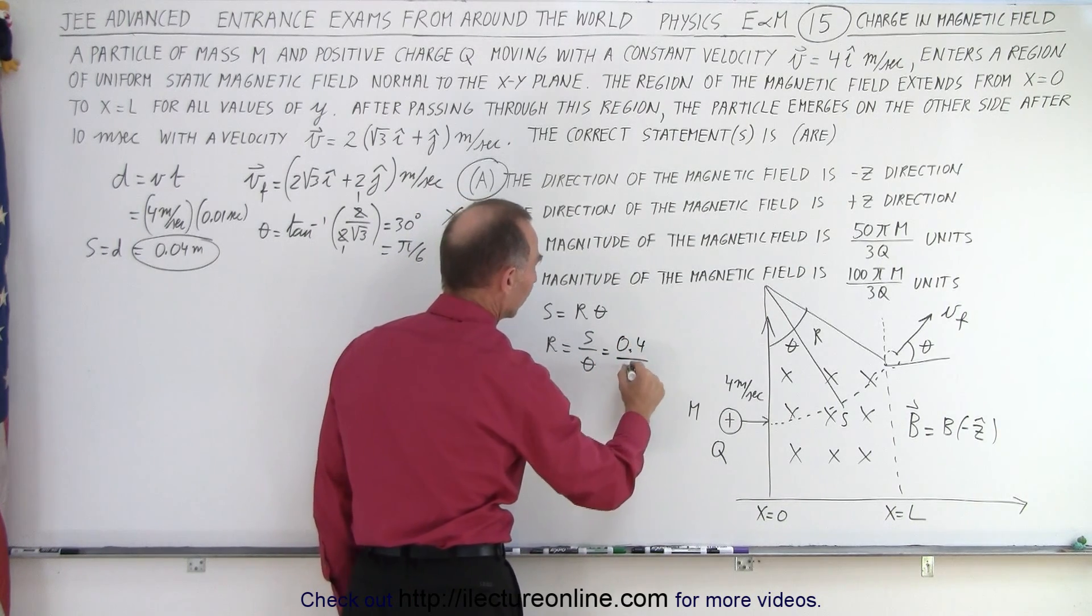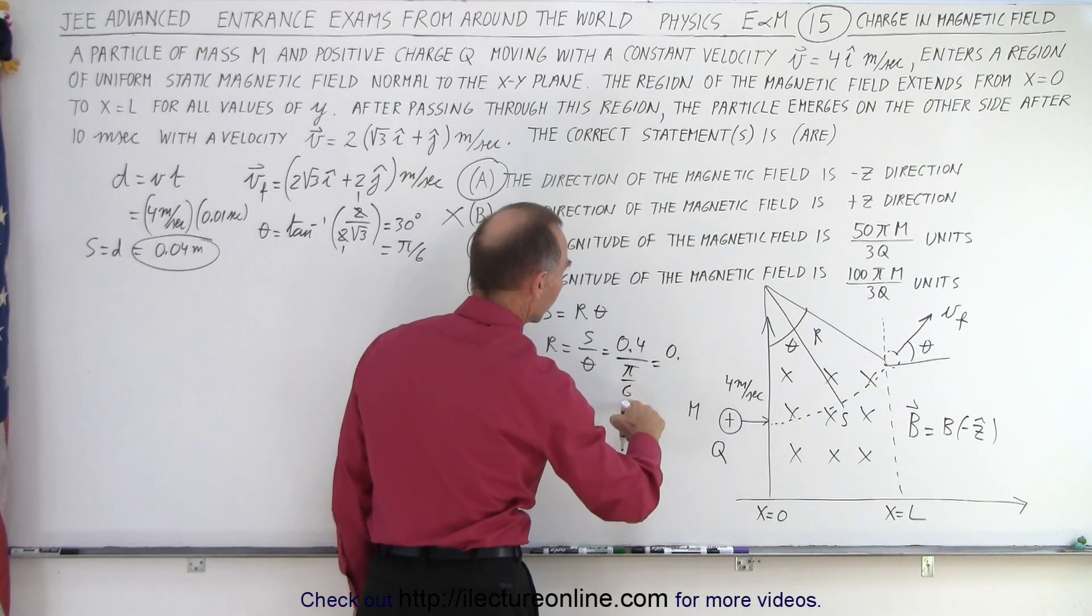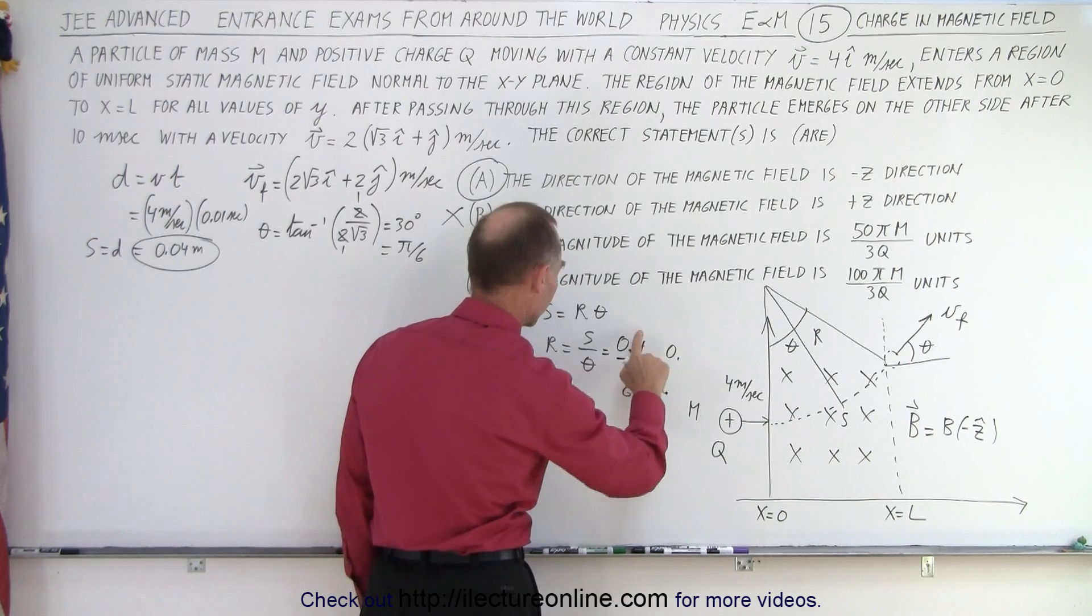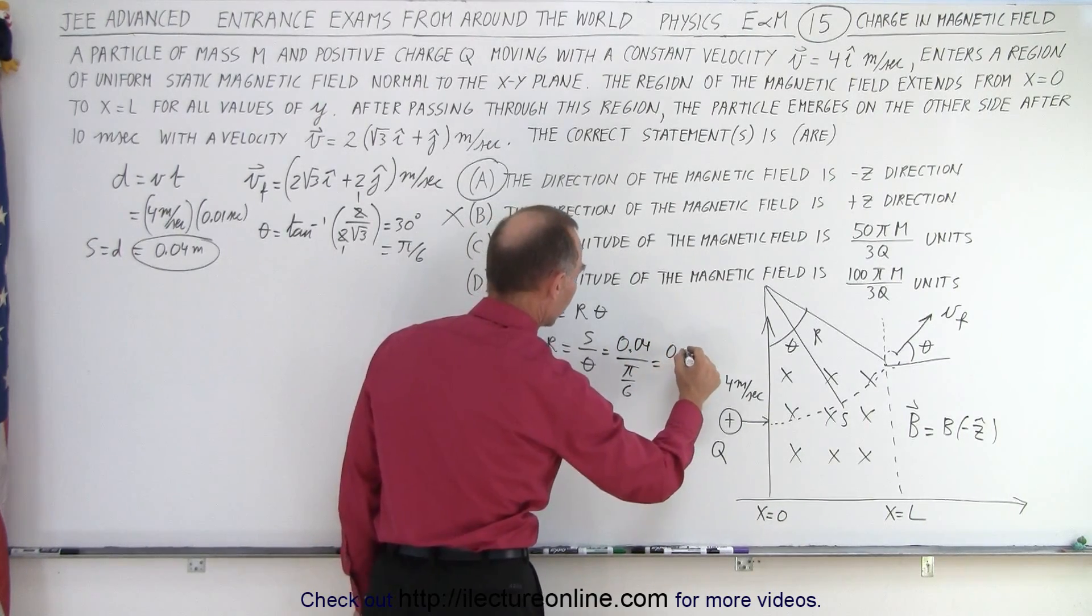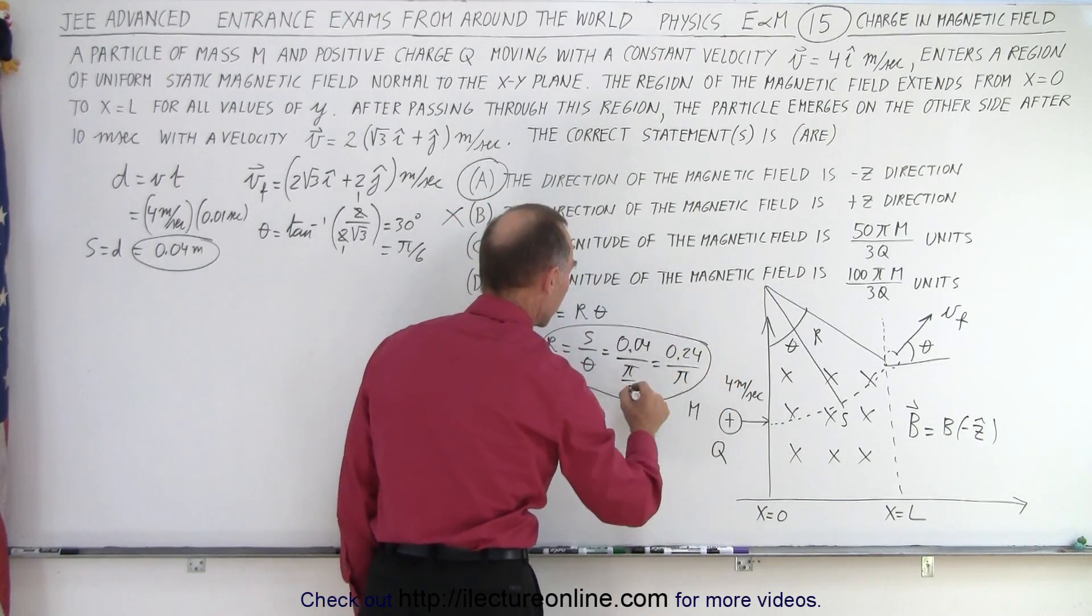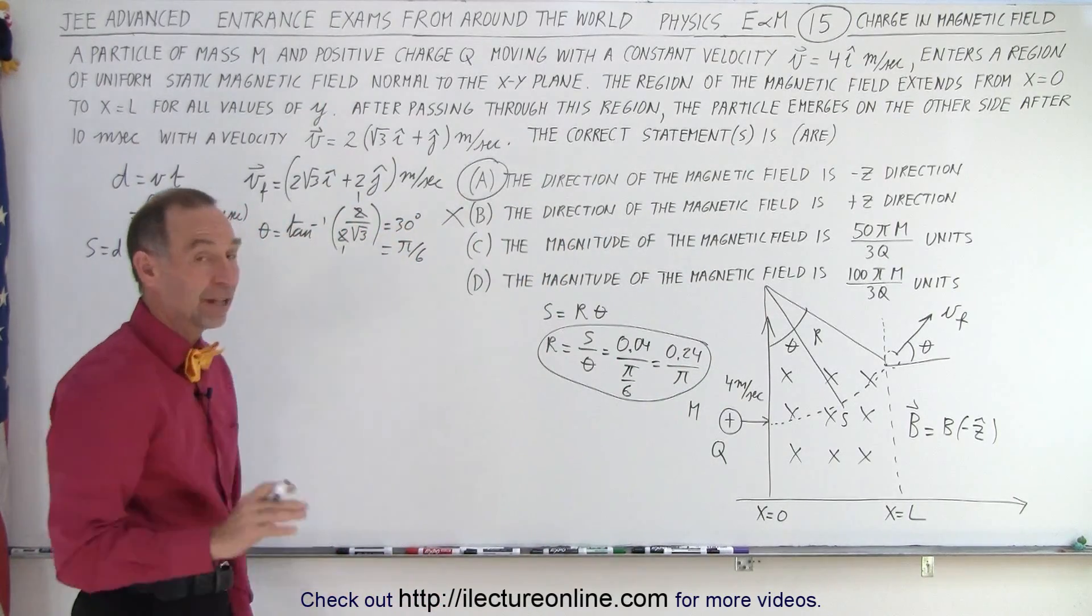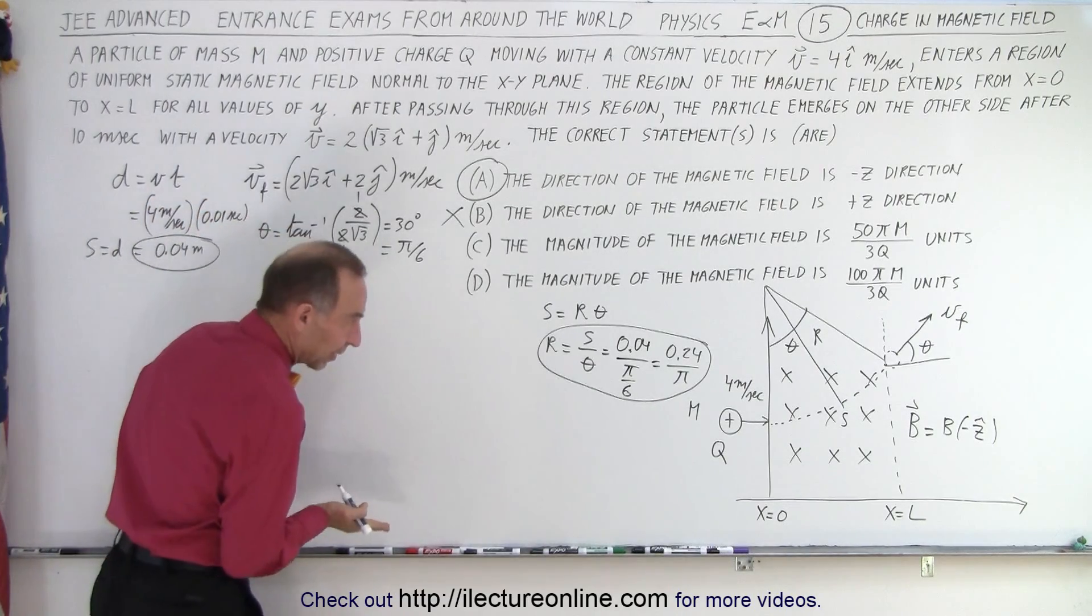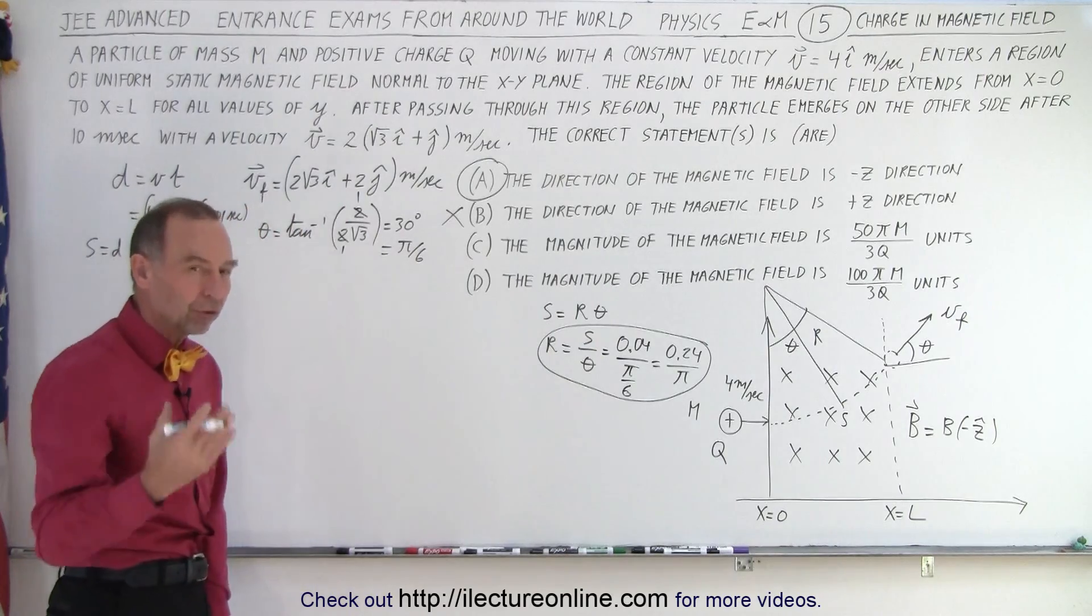That means that r is equal to s, which is equal to 0.04 divided by theta, which is pi over 6, which is 0.6 times 0.04. Let's see here, 0.04, we're missing a decimal place, so it would be 0.24 divided by pi. So that is the radius of the arc of the path of the particle.